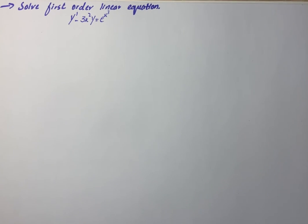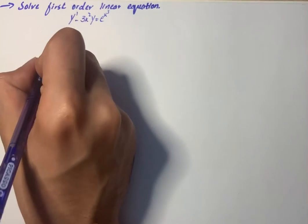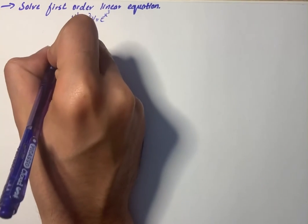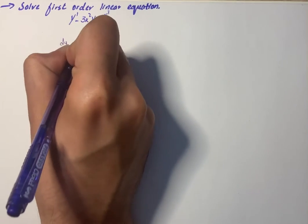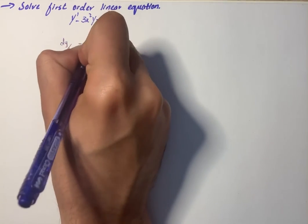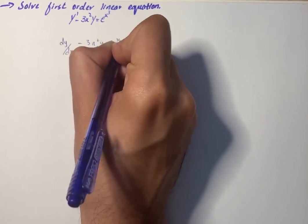The equation asks us to solve a first-order linear equation with y prime minus 3x squared y equals e raised to the power x cubed. We rewrite it as dy/dx minus 3x squared y equals e raised to the power x cubed.